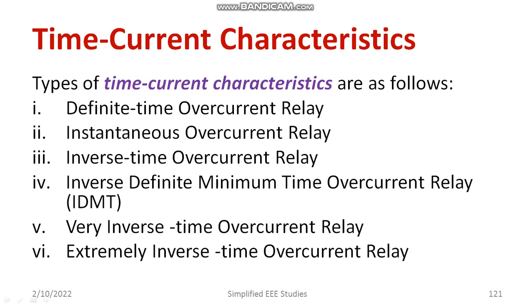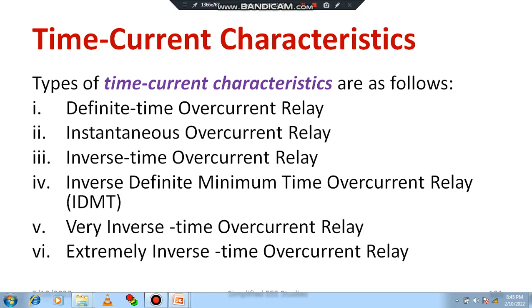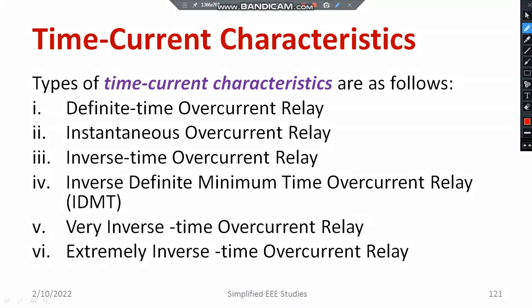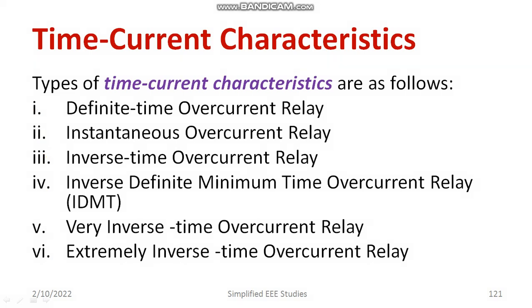These are the time-current characteristics of overcurrent relay. The types are: definite time overcurrent relay, instantaneous overcurrent relay, inverse time overcurrent relay, IDMT — inverse definite minimum time overcurrent relay — then very inverse time overcurrent relay, and extremely inverse time overcurrent relay. We need a brief understanding of each individual type of time-current characteristic, which will really help you understand the overcurrent relay.